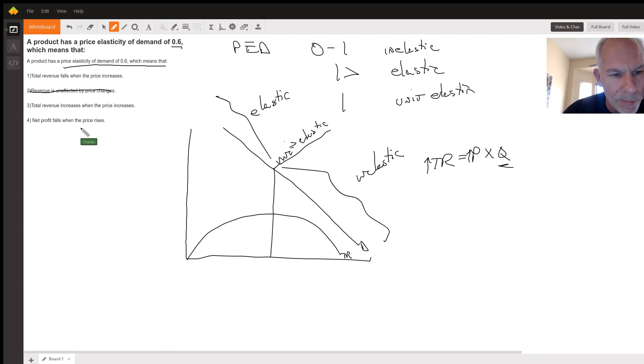A net profit falls when the price rises. Do we know anything about cost? Net profit would have to imply total revenue minus total cost would give you profit. We don't know anything about cost. So I don't think this answer is going to help us.